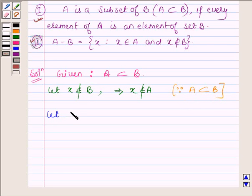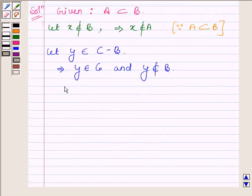Now let us take any arbitrary element y which belongs to set C minus B. This implies that y belongs to C and y does not belong to set B. This is by the definition of set difference.